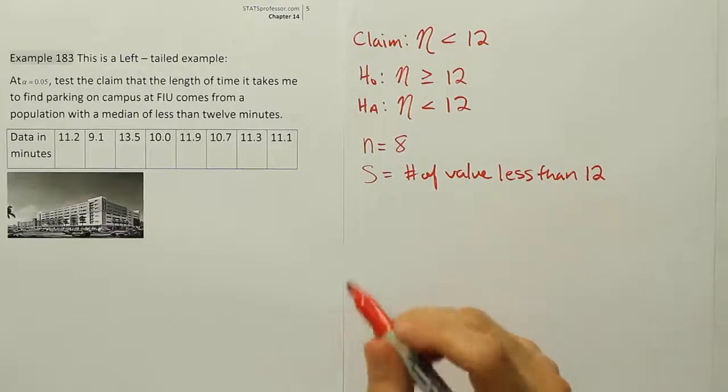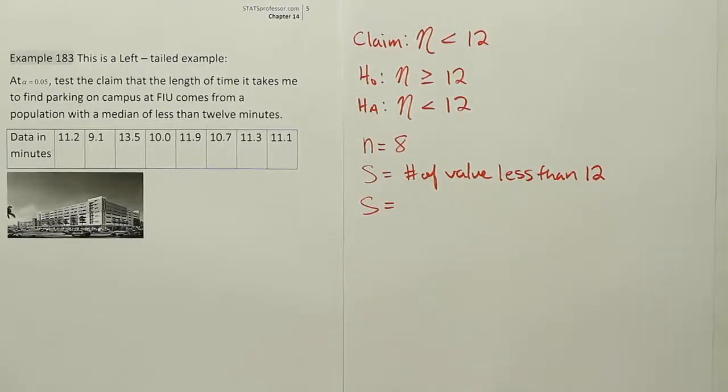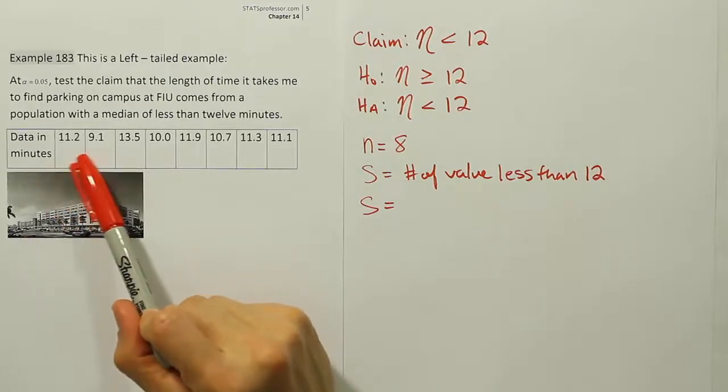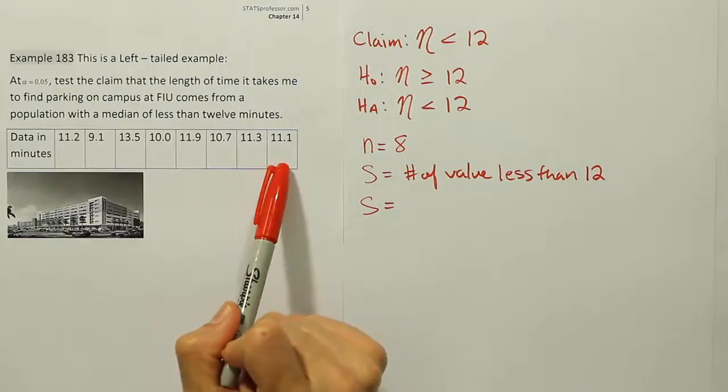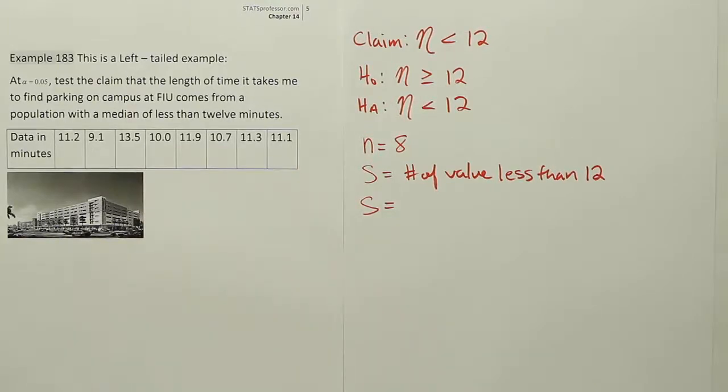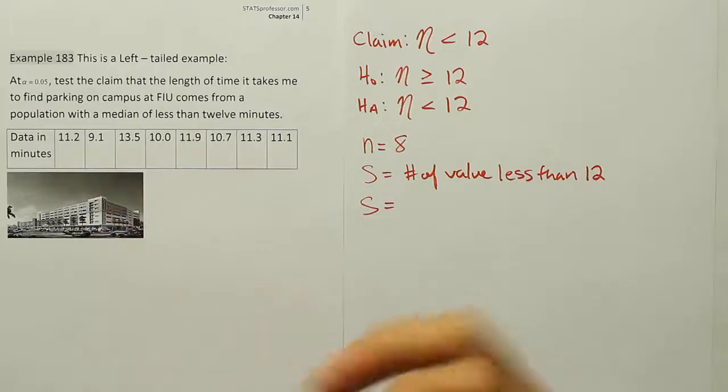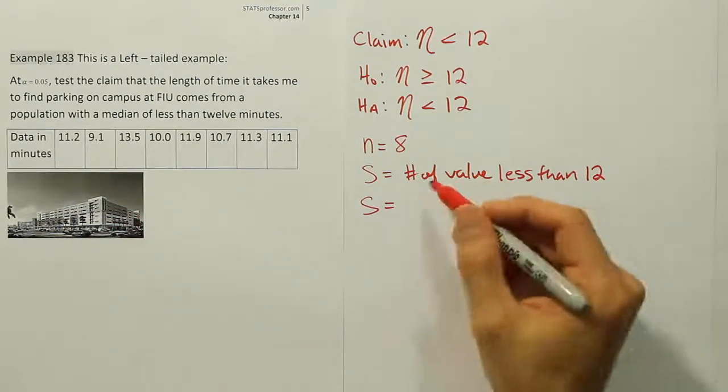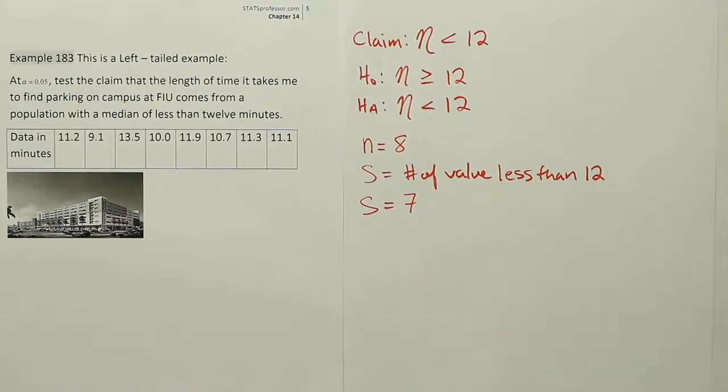Now that we have that, let's try to figure that out. What would S be in this case? How many values are less than 12? That one is, so that's 1, 2, 3, 4, 5, 6, 7. It looks like all 7 out of 8 values are less than 12. The only one that's not is this one. All the others are less than 12 minutes. So it looks like only one value is greater than. So 7 out of 8 are less than 12. So that's your test stat.